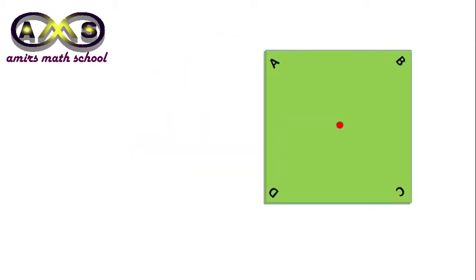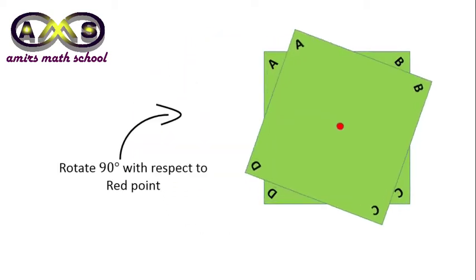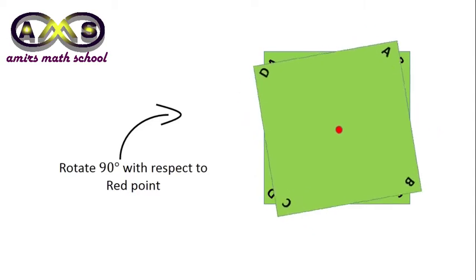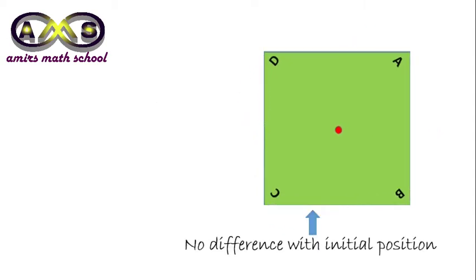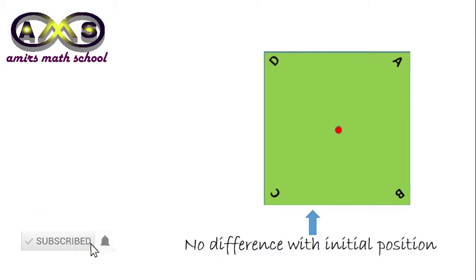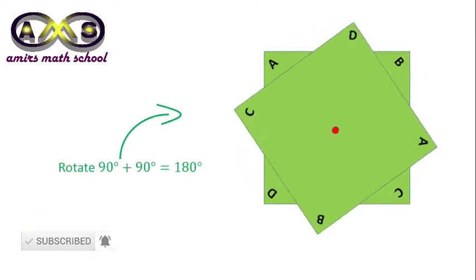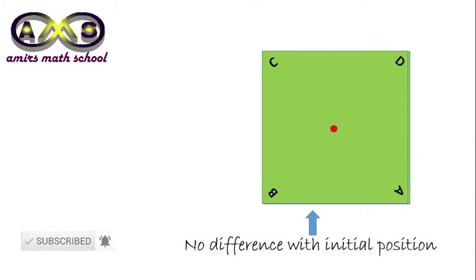Let's start with a square. After 90 degree rotation starting from the initial position with respect to the red point, it becomes identical with the initial one. For 180 degree rotation, the result is the same — there is no difference with the initial position.